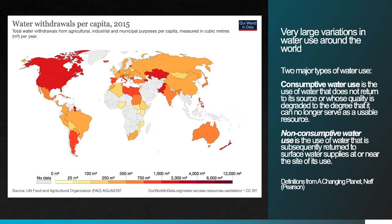We need to talk about two major types of water use. The first is consumptive water use — that's use of water that does not return the water to its source, or when the quality is degraded to the degree that it can no longer serve as a usable resource. For example, if water used for mining gets contaminated and has to be stored in a pond and can't be reused, that's consumptive water use.